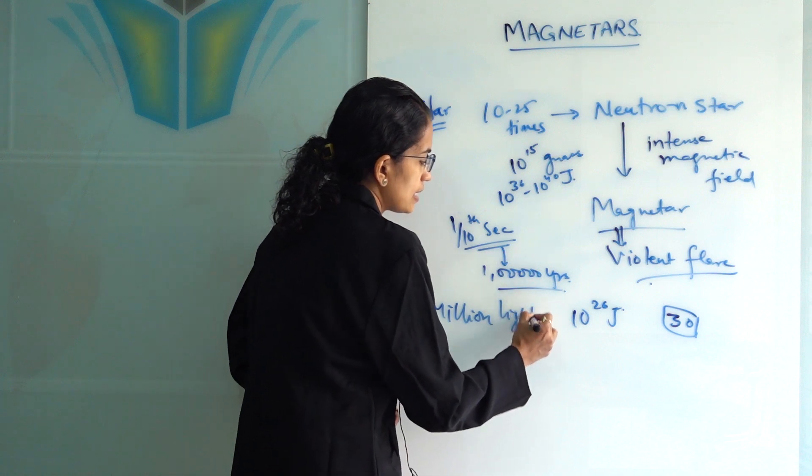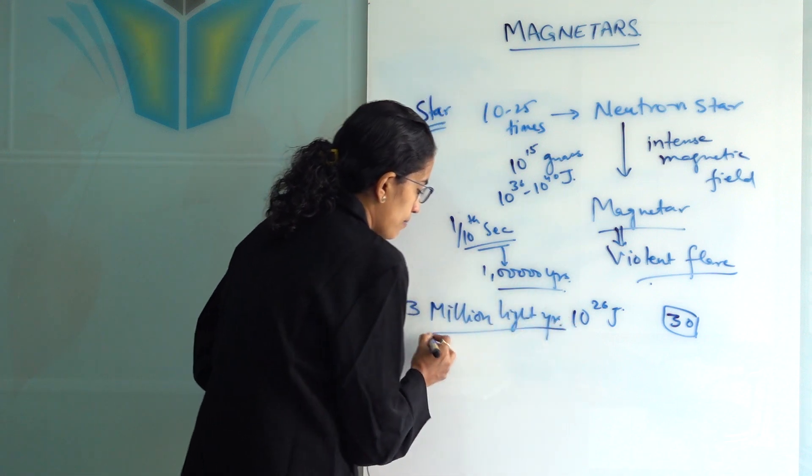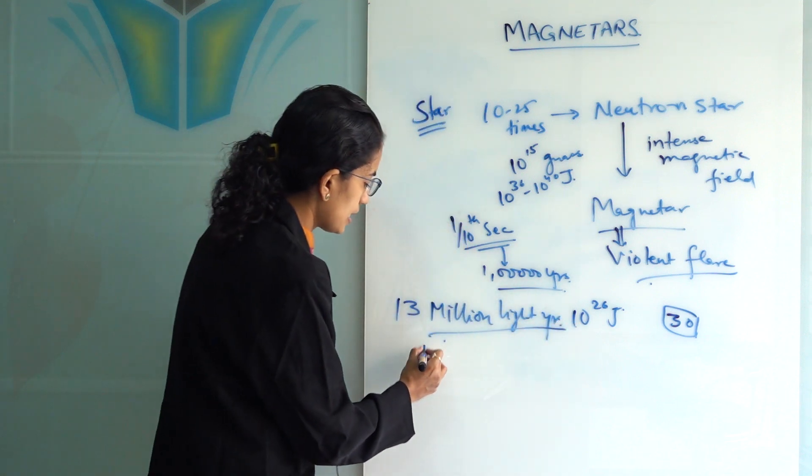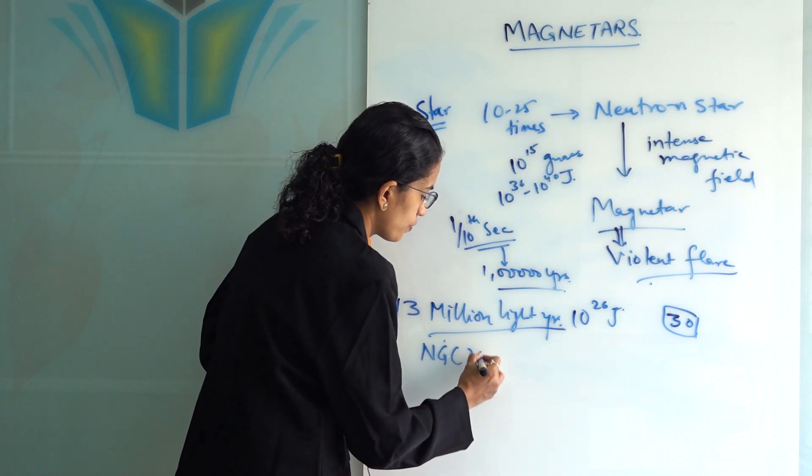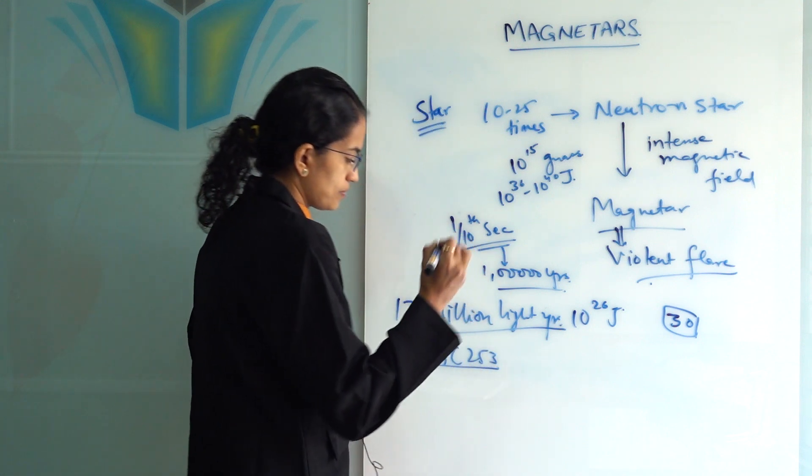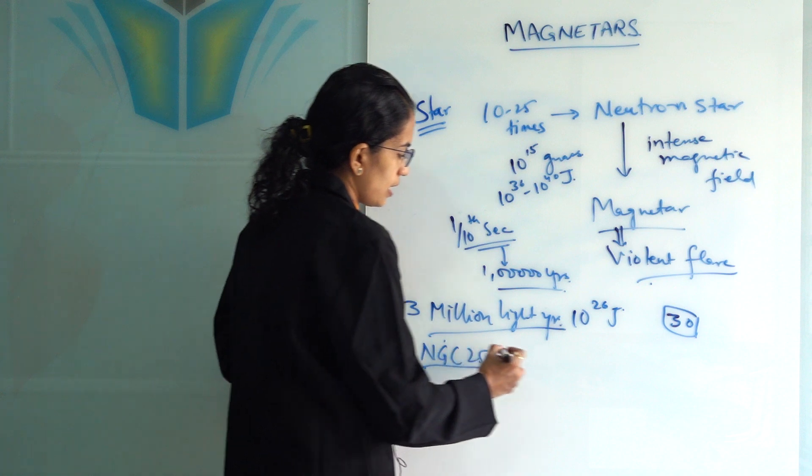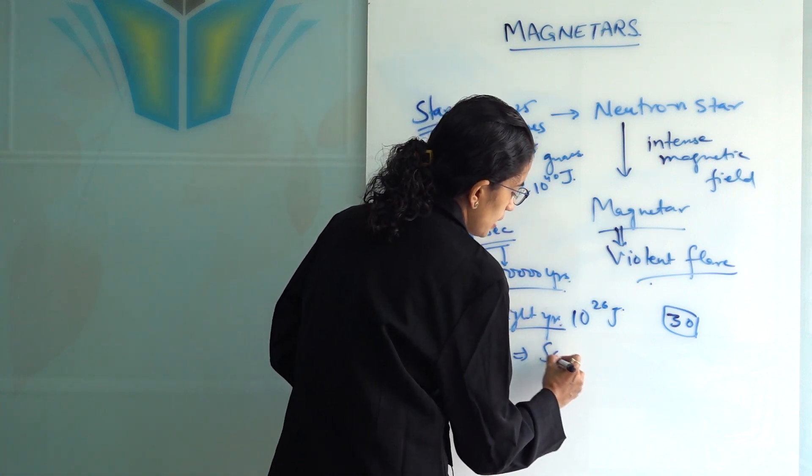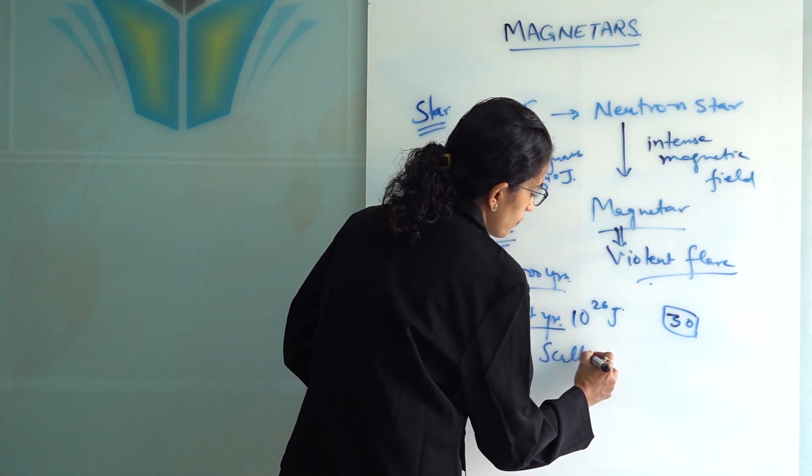These distant magnetars are seen in the direction of NGC 253, and they are found in the Sculptor group of galaxies.